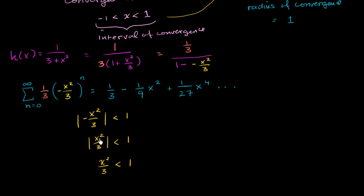The absolute value of x²/3 is just x²/3 because this is never going to take on a negative value. So we can multiply both sides by 3 to say that x² needs to be less than 3, which means that the absolute value of x needs to be less than the square root of 3.